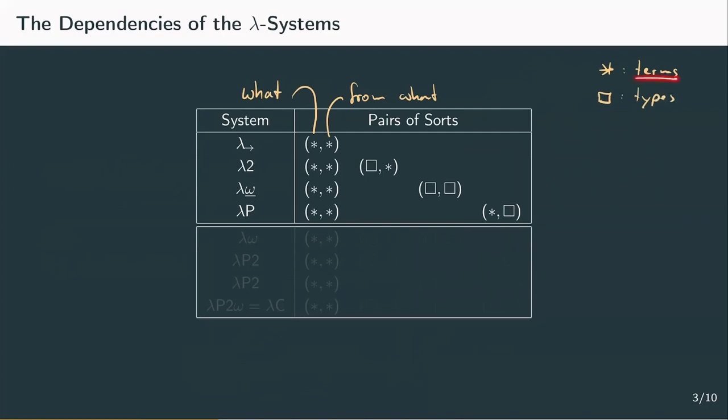Star star stands for terms depending on terms, which is needed for all systems. Box star stands for terms depending on types. Box box represents types depending on types. And lastly, star box stands for types depending on terms.